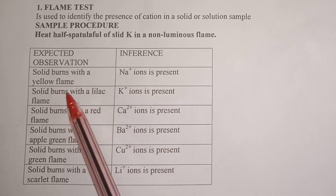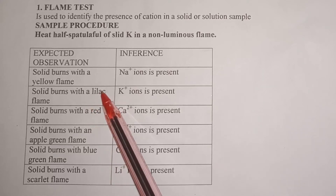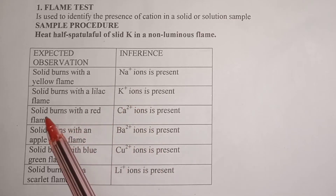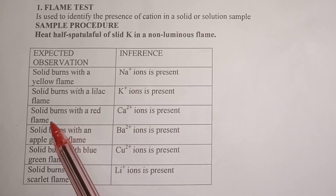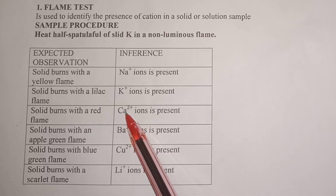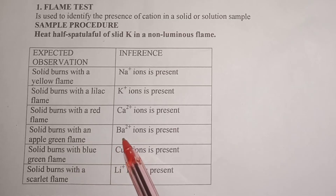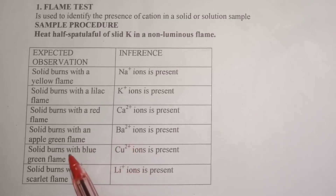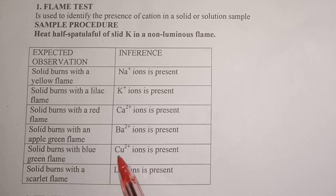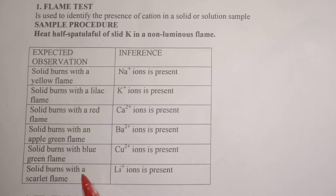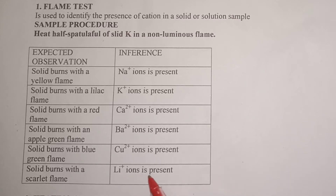If the solid burns with a lilac (purple) flame, the cation present is potassium ion. If the solid burns with an apple green flame, the cation present is barium ion. If it burns with a blue-green flame, the cation present is copper ion. Or if the solid burns with a scarlet flame — scarlet means dark red — then the cation present is lithium ion.